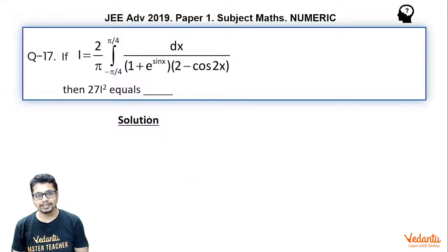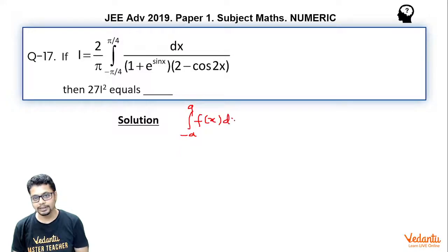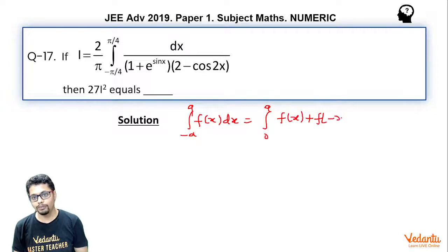Now seeing such an expression, a property of definite integration should come to your mind, which is: integral from −a to a of f(x) dx is equal to integral from 0 to a of [f(x) + f(−x)] dx.